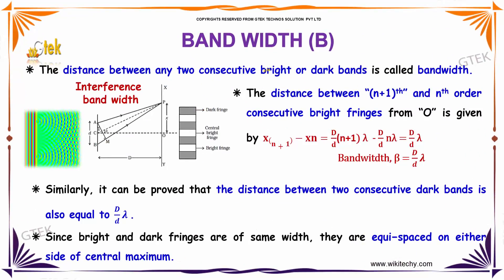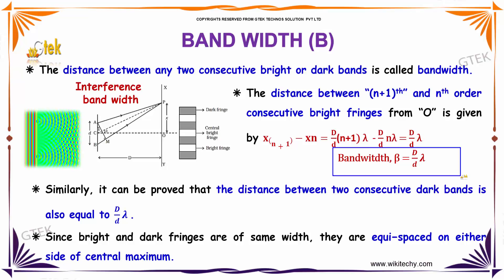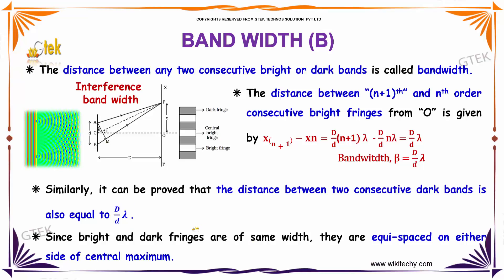The distance between any two consecutive bright and dark bands is called bandwidth. The distance between the (n+1)th and nth order consecutive bright fringes from O is given by x_(n+1) minus x_n, which equals (D/d)(n+1)lambda minus (D/d)(n)lambda, giving finally D lambda divided by d. So bandwidth equals D lambda divided by d. It can be proved that the distance between two consecutive dark bands is also equal to D lambda divided by d. Since bright and dark fringes are of the same width, they are equally spaced on either side of the central maximum.